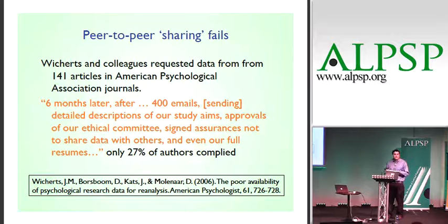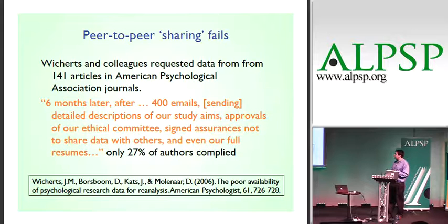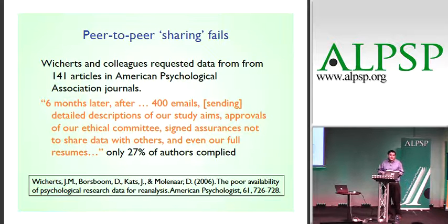A classic case is Wicherts et al. in psychology. In the American Psychological Association journals, authors have to sign a statement saying they will share their data upon request, no questions asked. But when they actually requested data from all of the recent papers in the journal, six months later, after 400 emails, detailed descriptions of study aims, approvals of ethical committee, signed assurances, and full resumes, only 27% of authors complied.